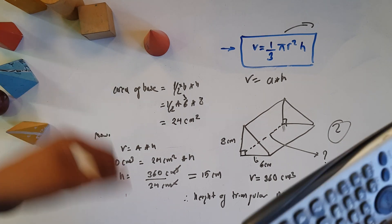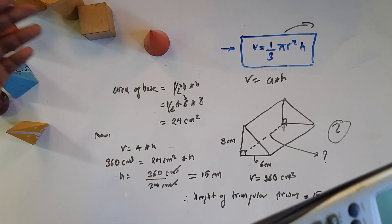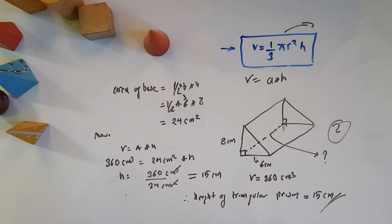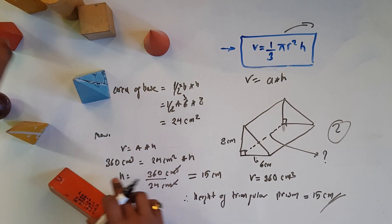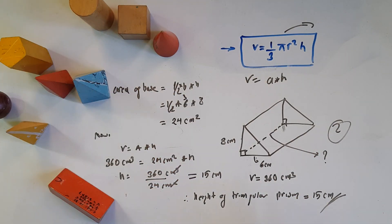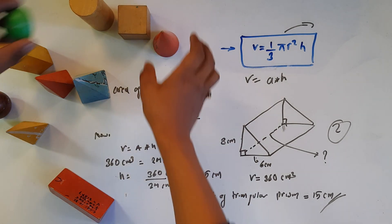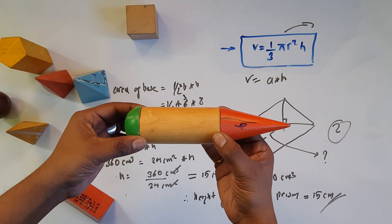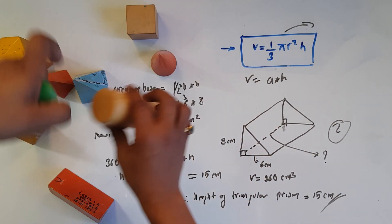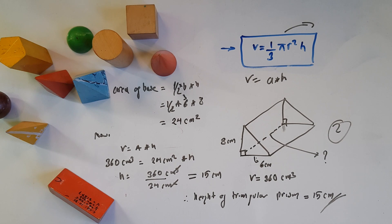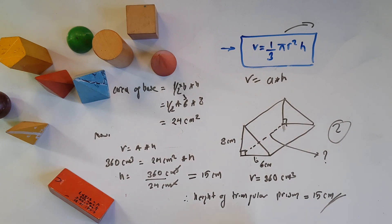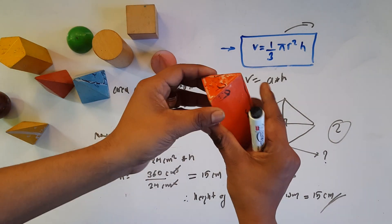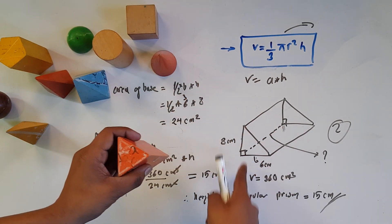The formula used is volume equals area of base into height. I will show you the volume of the triangular prism. The area of the base is the right angle triangle, and the formula is half base into height for the triangular cross-section.